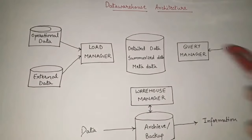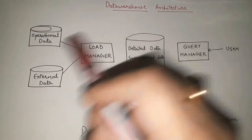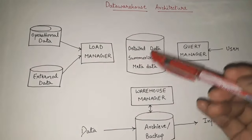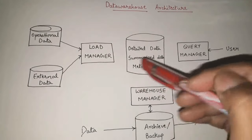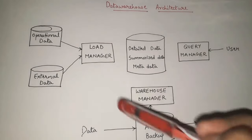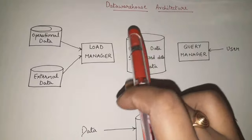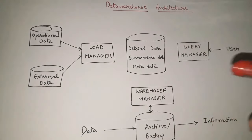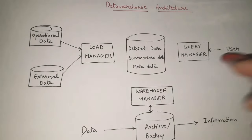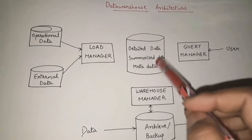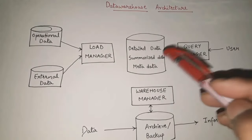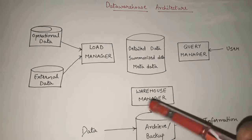That covers the whole flow and the importance of all the components. But who actually does these tasks — finding summarized data from detailed data, maintaining metadata, and taking care of everything? That is the Warehouse Manager. The Warehouse Manager is the most important component, handling most of the things going on inside the data warehouse, including creating summarized data from detailed data and maintaining metadata.